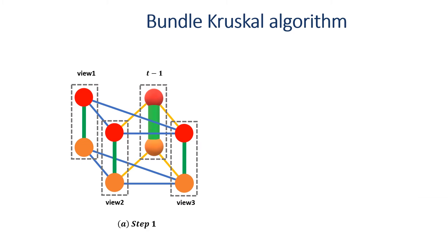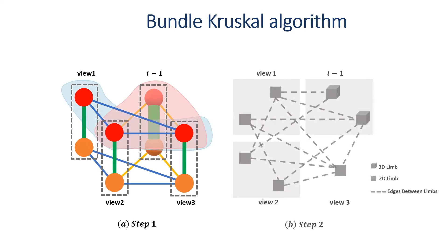Traversing the huge association space in a brute force manner is infeasible for real-time systems. Thus, we propose a bundle Kruskal algorithm to solve our 4D association graph efficiently. First step, we search all possible limb cliques. As the figure shows, we mark two example limb cliques, a red area and a blue area. Next step, we assemble limb cliques into multiple 4D human skeletal structures in a greedy manner.